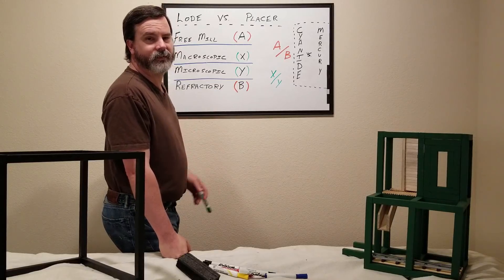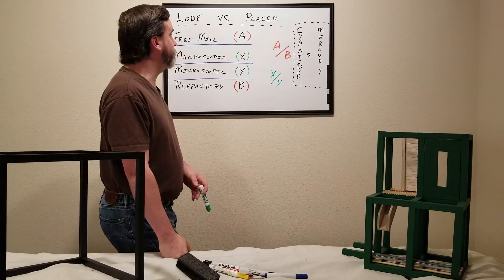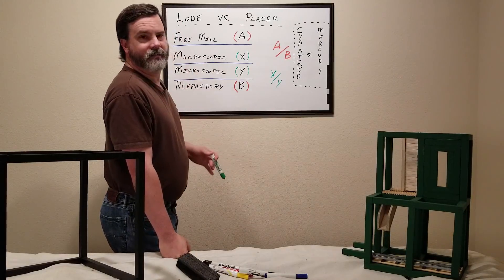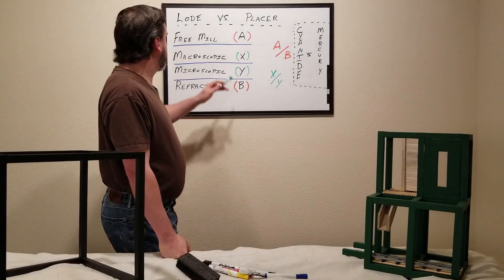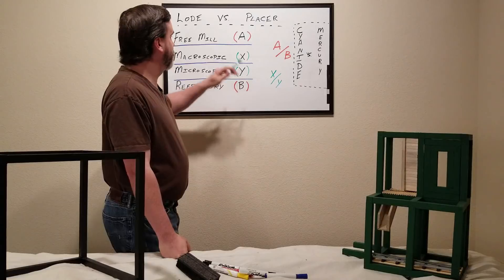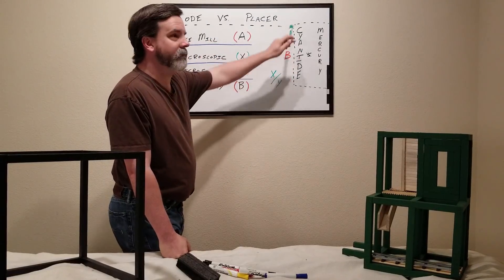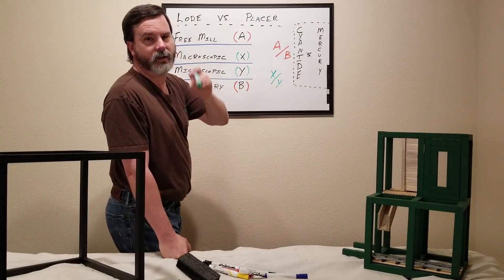Anyway, so that's the big difference between gold types. Lode versus placer. When you ask me where's the gold at, really what you're asking me for is macroscopic free mill. True free mill is everything you can get out through chemical processing without oxidation.